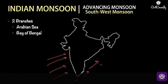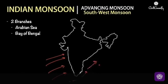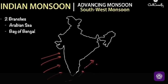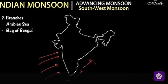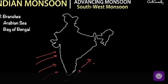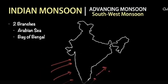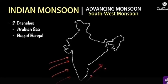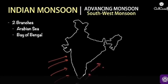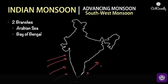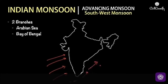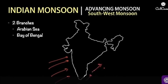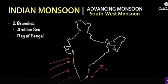Around the time of the monsoon's arrival, the normal rainfall increases suddenly and continues constantly for several days. This is known as the burst of the monsoon. So when rainfall advances into our country, it normally increases suddenly and continues constantly for several days — it is known as the burst of monsoon.